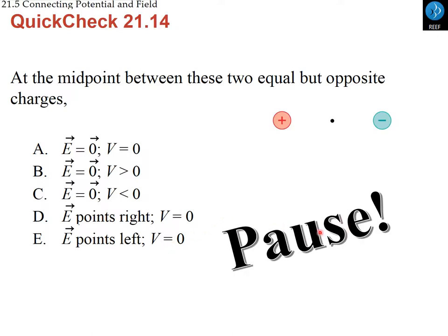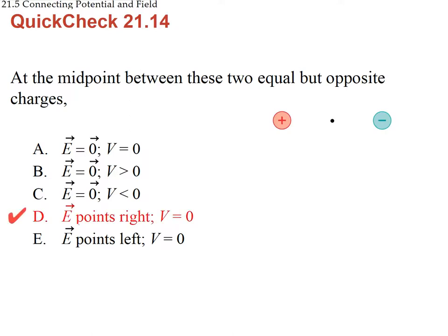Consider a point midway between two charges of opposite sign. Which statement is correct about the field and potential there? At the midpoint, the positive charge produces a field pointing right and the negative charge also produces a field pointing right — they add up, so the field is not zero. That eliminates three possibilities.